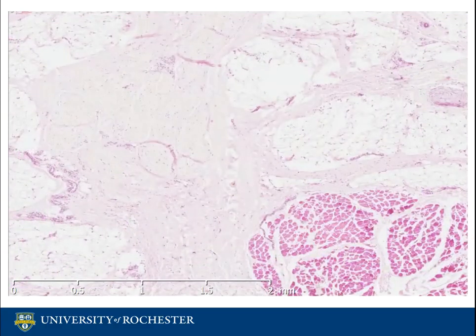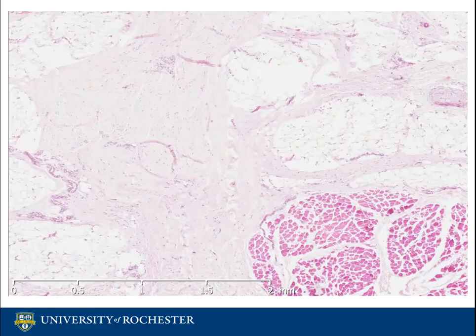The dermis is located deep to the epidermis. It is a thick layer of fibrous and elastic tissue, mostly of collagen and elastin. Elastin is what gives skin its flexibility, and collagen is what gives skin its strength. The dermis contains blood vessels, nerve endings, sweat and oil or sebaceous glands, and hair follicles.